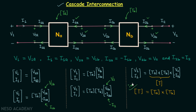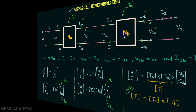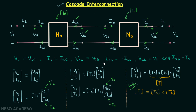Due to this result, T parameters, also known as transmission parameters or cascade parameters, are very important and useful. One key thing to keep in mind: the multiplication of matrices must be performed in the order the networks are connected. This concludes the lecture on cascade interconnection of two-port networks.